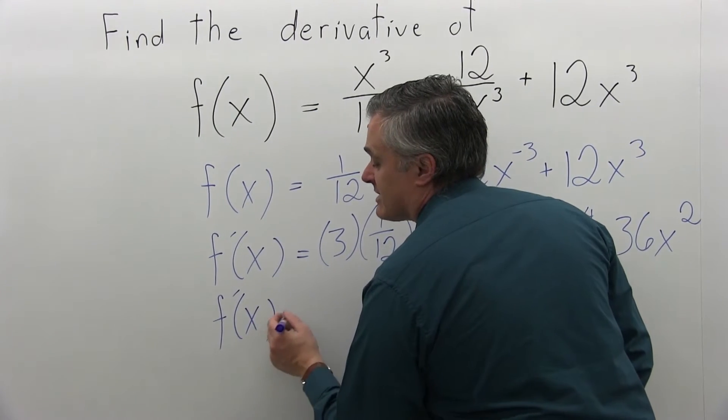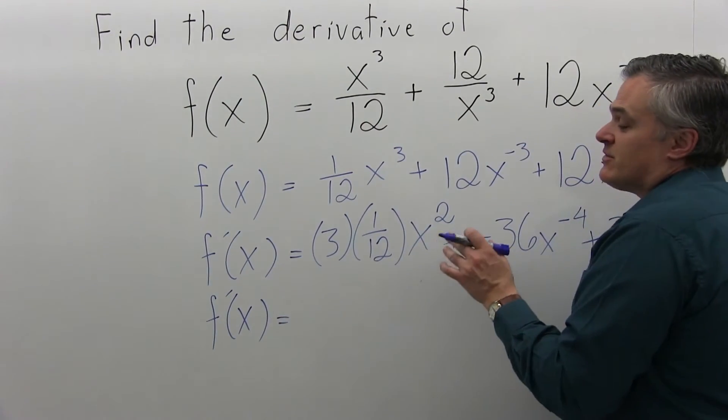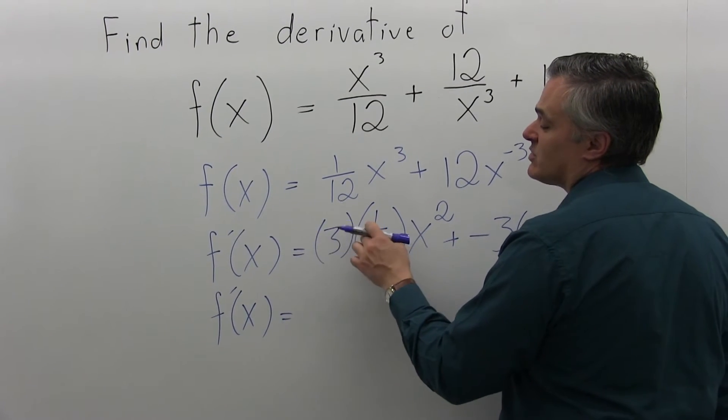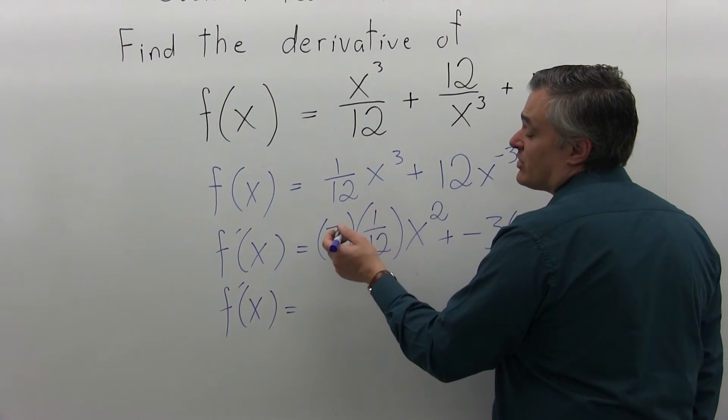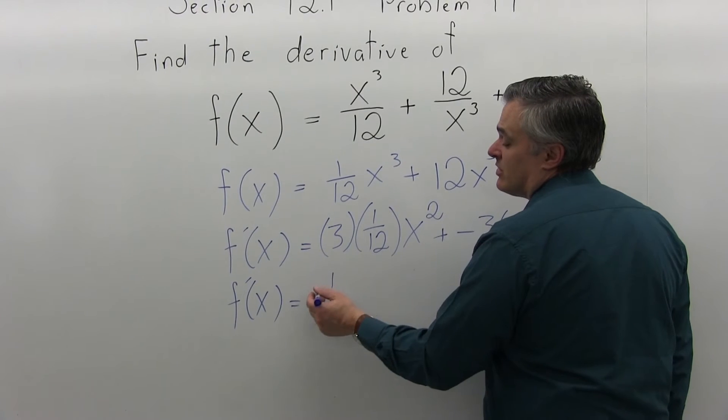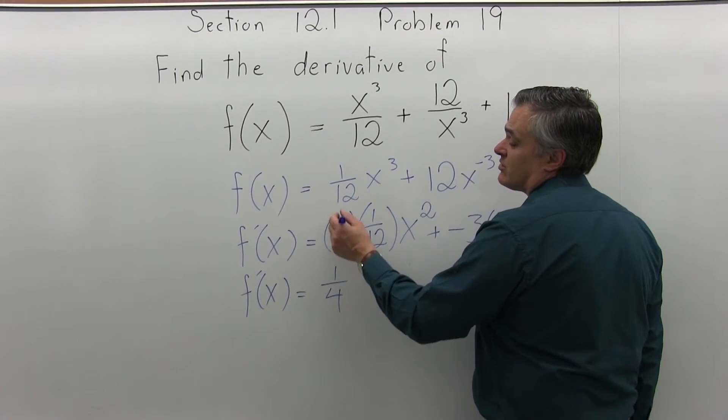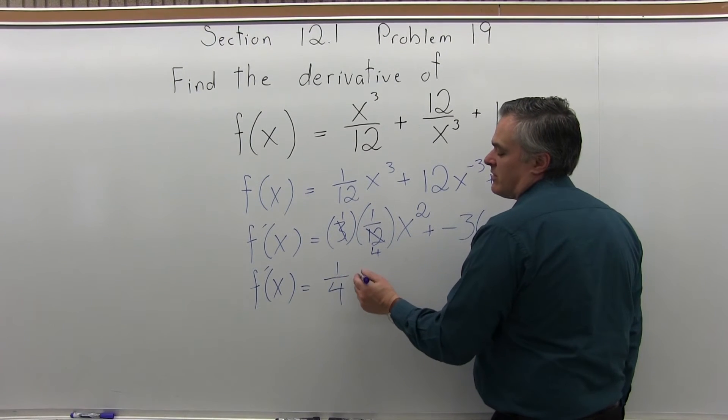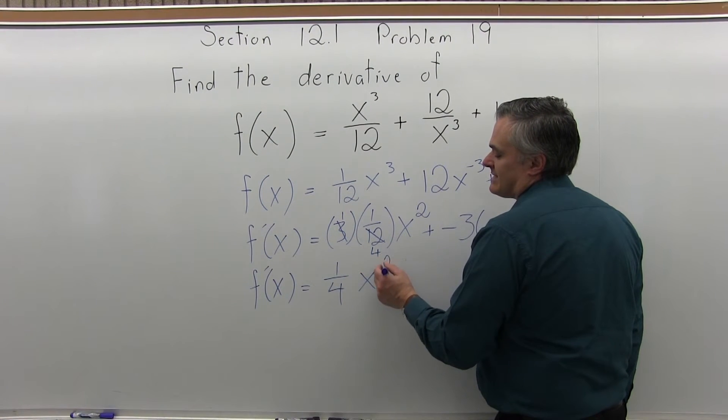Let's do f'(x) equals. Now in my answer, the first piece is 3 times 1/12 x². Well, the 3 times 1/12 is 3/12, which I can reduce to one-fourth. Or you can say 3 goes into 3 once, 3 goes into 12 four times. However you think of it, you get (1/4)x².